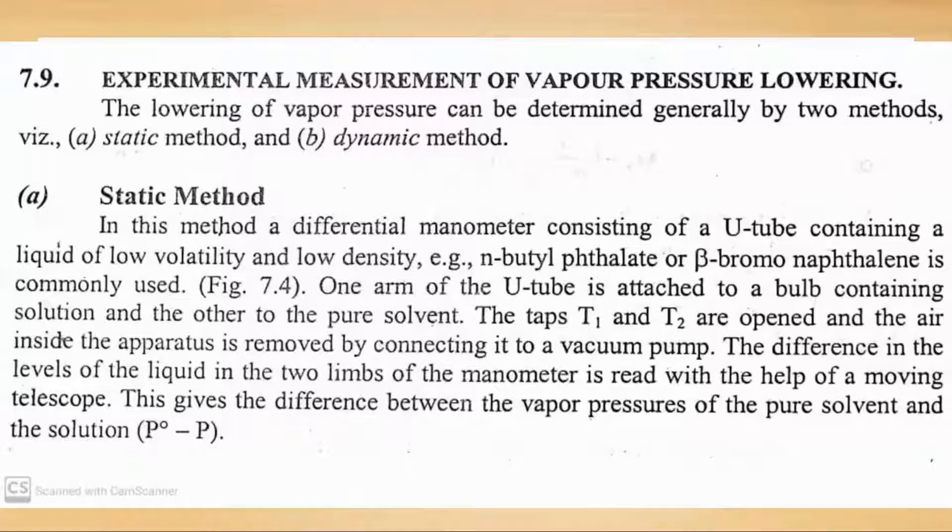One arm of the U-tube is attached to a bulb containing solution and the other to the pure solvent. The taps T1 and T2 are opened and the air inside the apparatus is removed by connecting it to a vacuum pump. The difference in the levels of the liquid in the two limbs of the manometer is read with the help of a moving telescope.